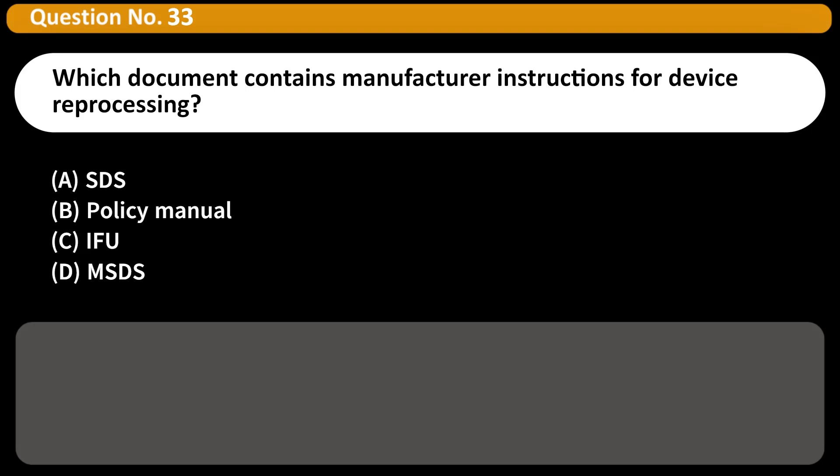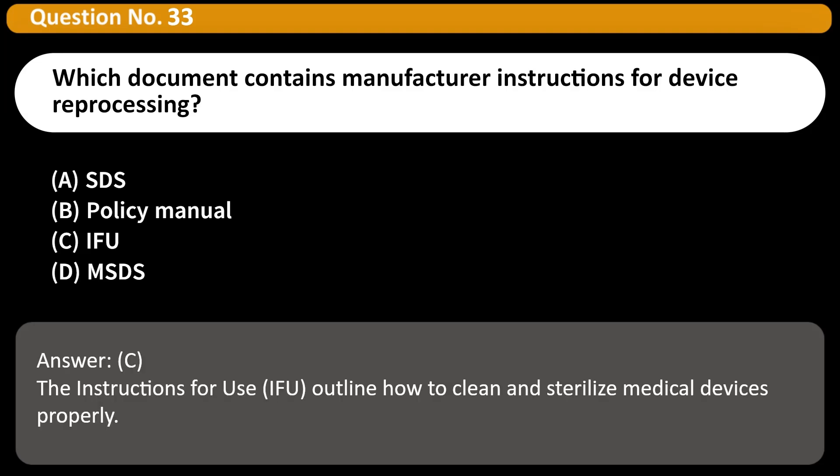Which document contains manufacturer instructions for device reprocessing? A. SDS, B. Policy manual, C. IFU, D. MSDS. Answer C. The instructions for use (IFU) outline how to clean and sterilize medical devices properly.